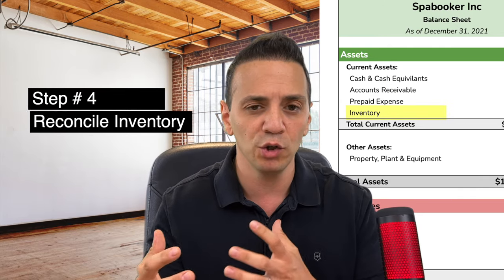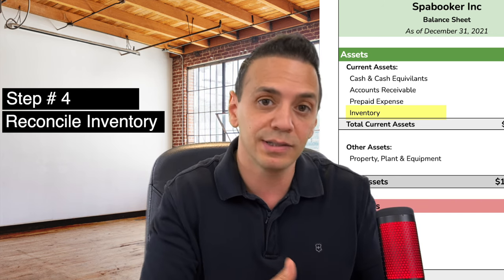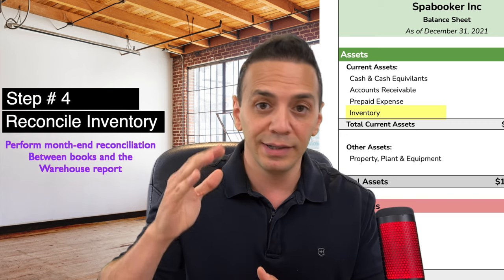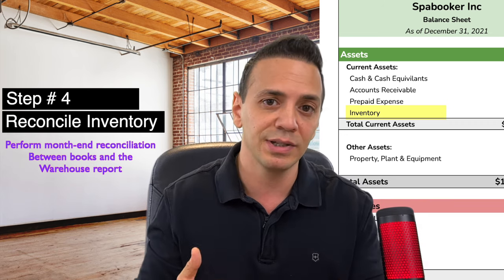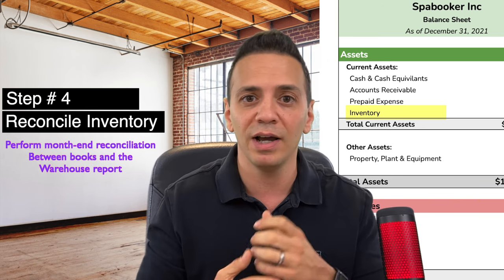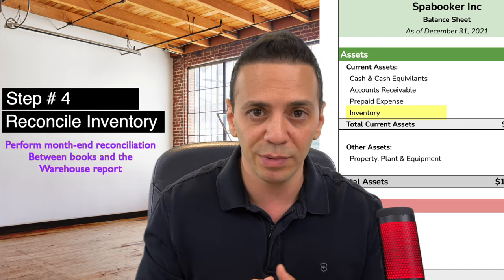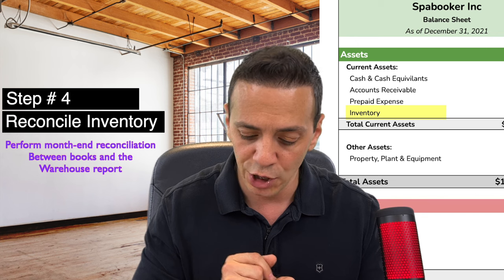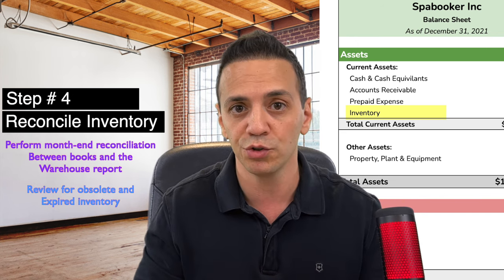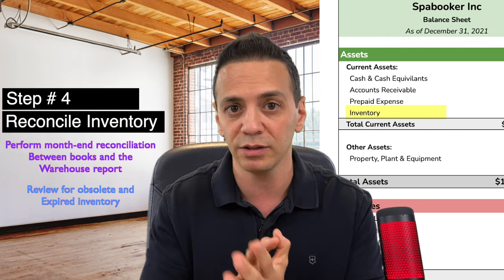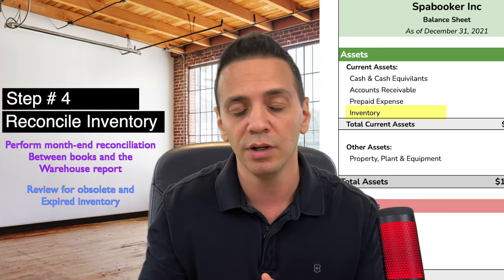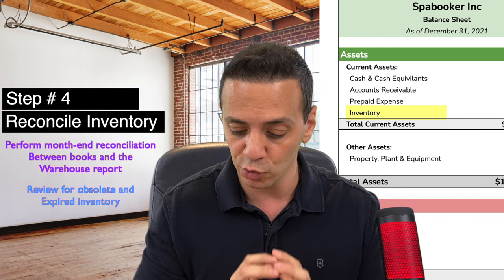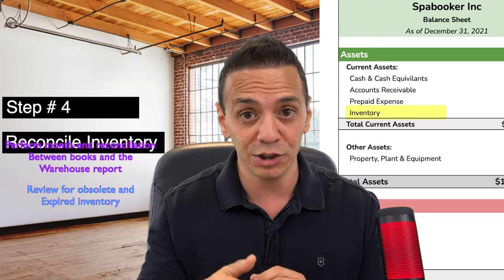Number four is inventory. Whether you maintain inventory by SKU in your ERP software or in Excel, do a month-end reconciliation to the warehouse report. Contact the warehouse each month and get a listing by SKU of quantities, then reconcile to your books and records — otherwise the auditor will catch the discrepancy and you'll have to write it off. Also review for obsolescence and expired goods, looking at inventory by SKU and expiration bucket to determine any required write-offs to cost of goods sold.